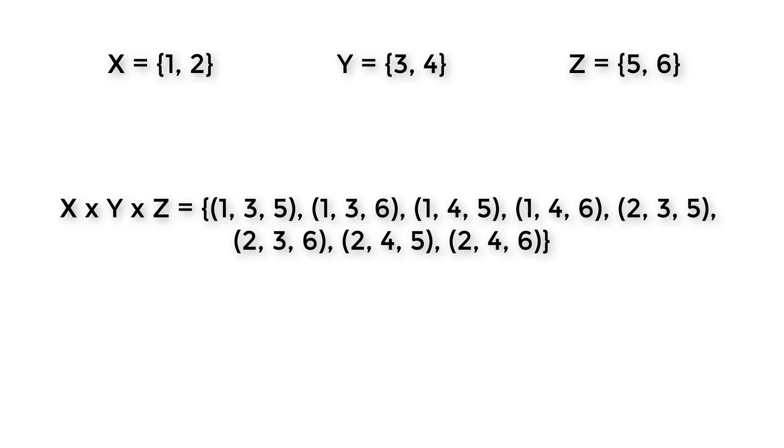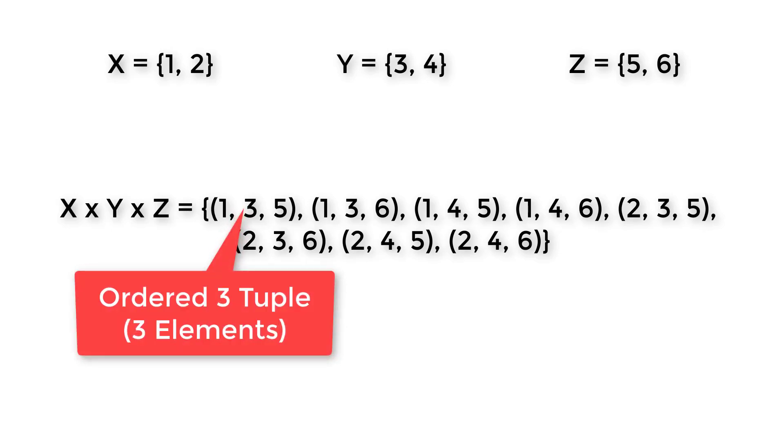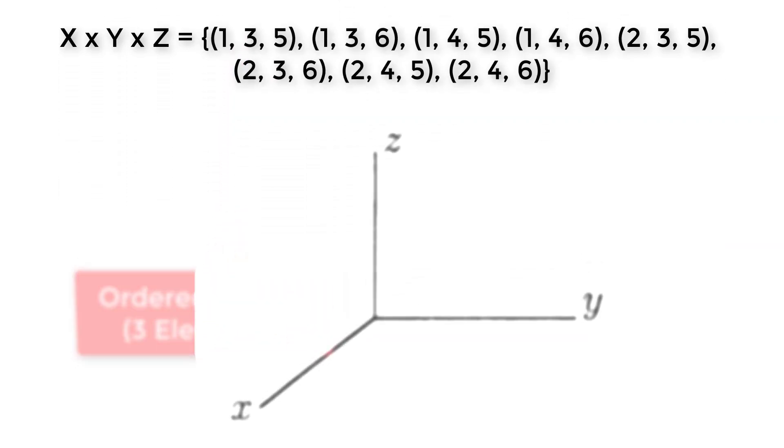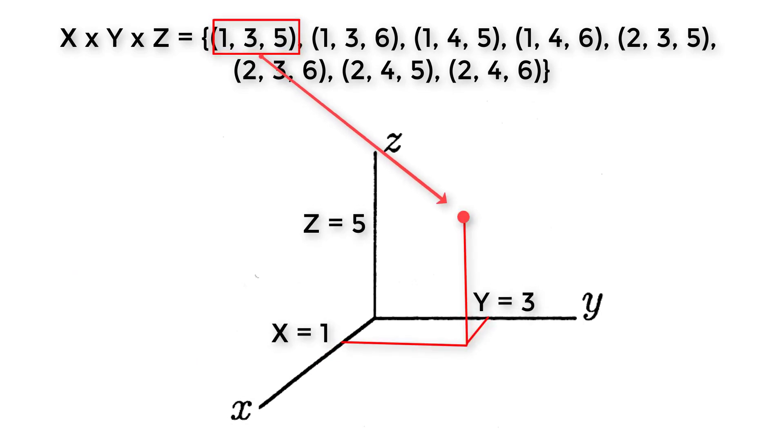The elements here are ordered triples that represent 3D Cartesian plane. For example, this is the (1,3,5) point.